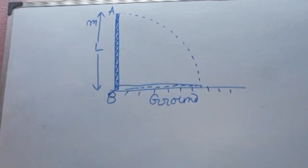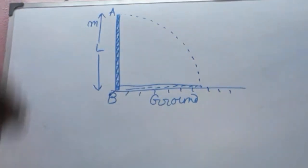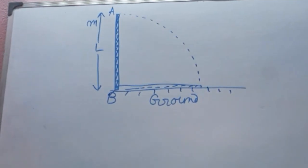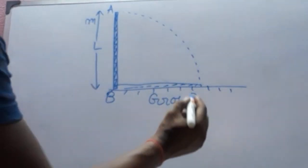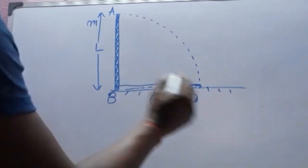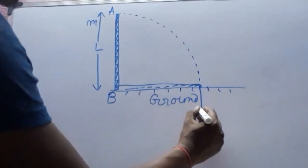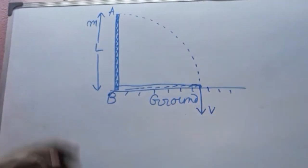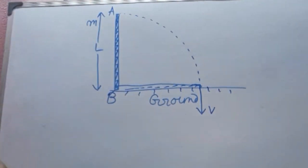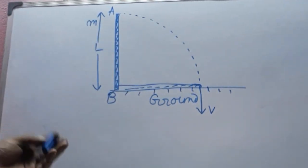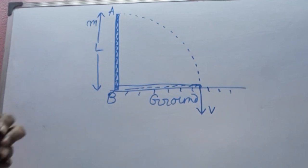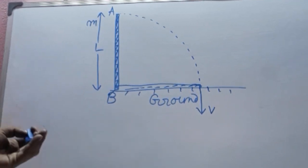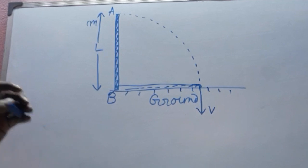Now, if I allow the rod to fall down, it will strike the ground here. The question is: what is the velocity with which the end A of the rod strikes the ground? We can solve the problem with the help of conservation of total mechanical energy under gravity.